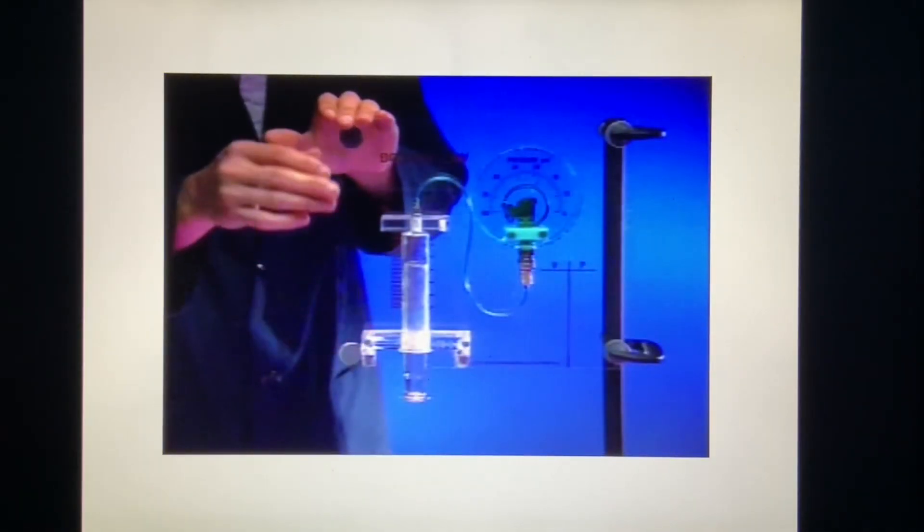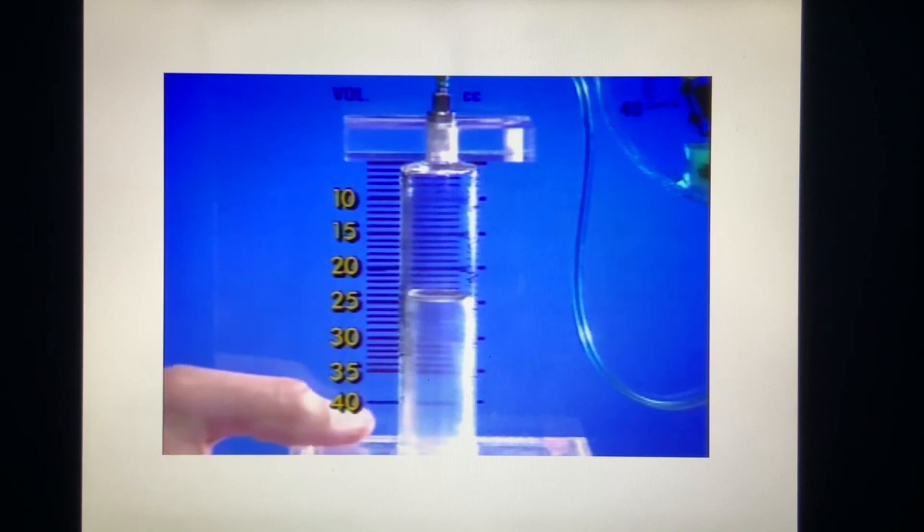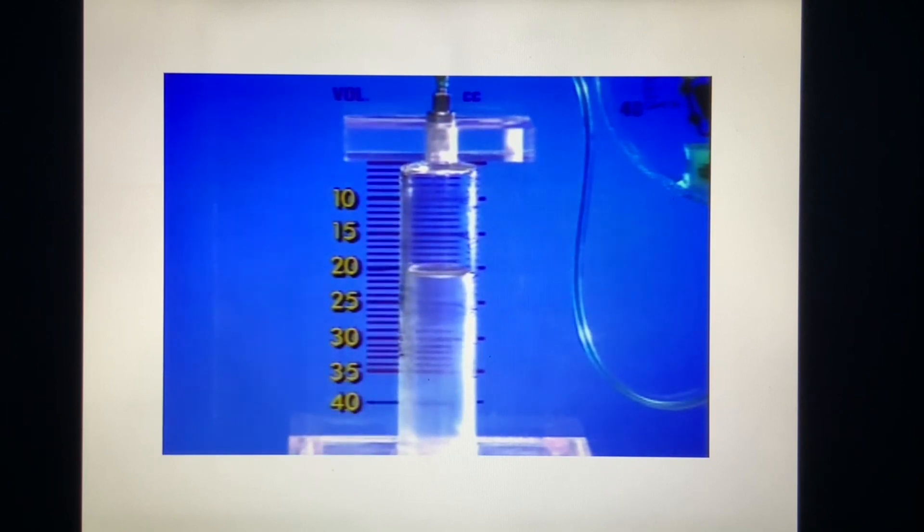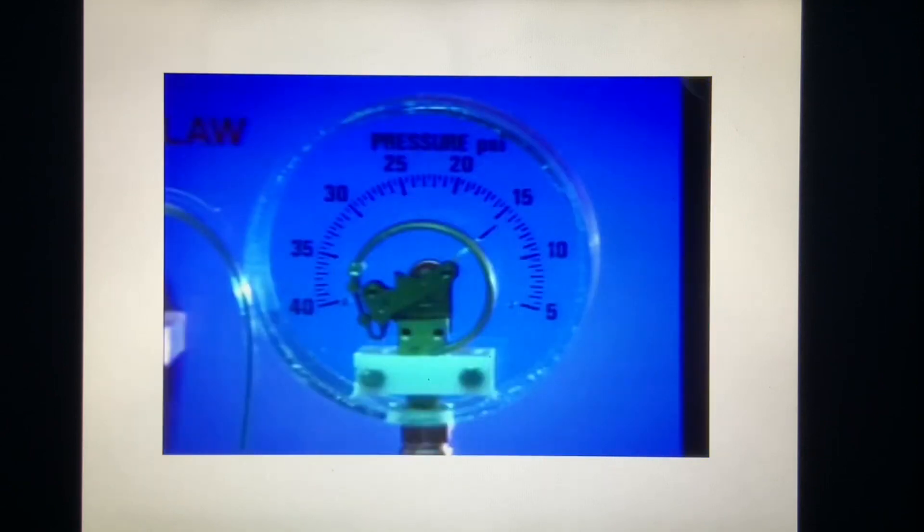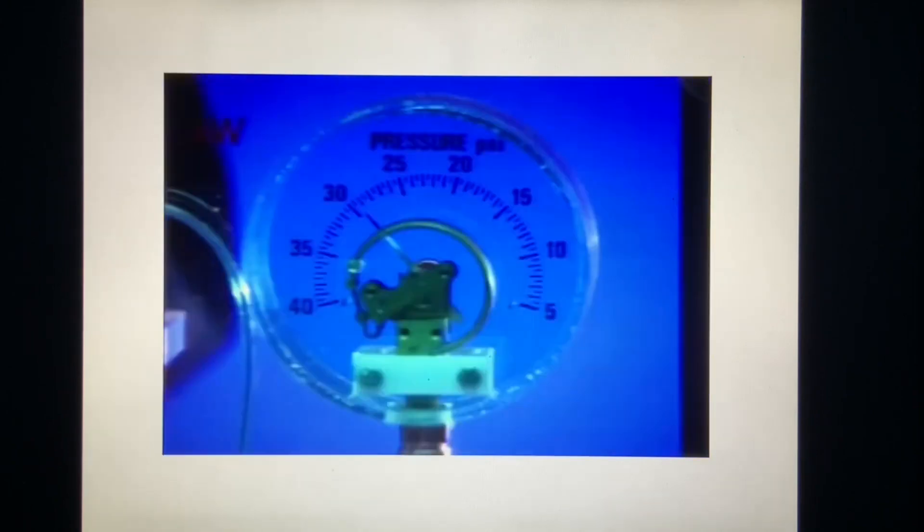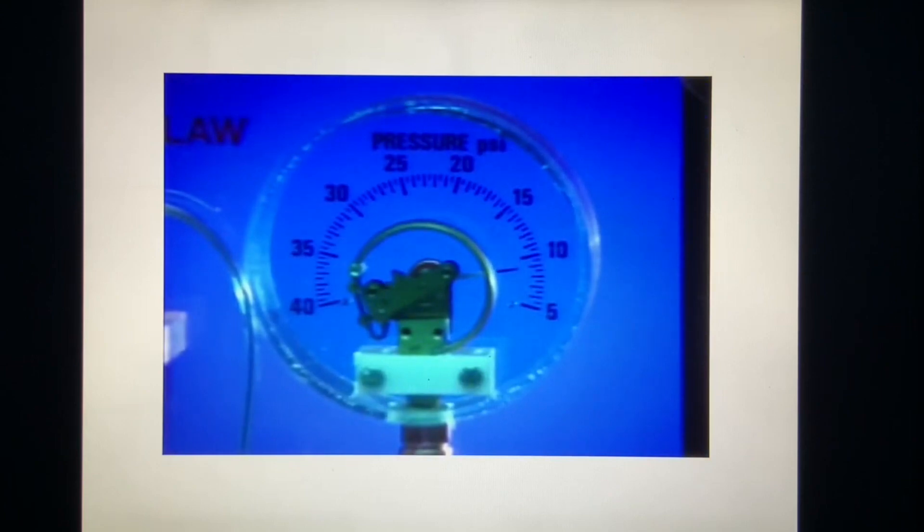This syringe is connected to a pressure gauge. We'll use this apparatus to demonstrate the relationship between pressure and volume for a gas such as air. The total volume of the air in the syringe and gauge can be read on the scale at the side. We'll start with a 20 cubic centimeter volume of air at normal atmospheric pressure, about 14.7 pounds per square inch. When the volume is decreased to 10 cc's, the pressure increases to about 29 pounds per square inch. If the volume is instead increased to 40 cc's, the pressure drops to about 7 pounds per square inch.